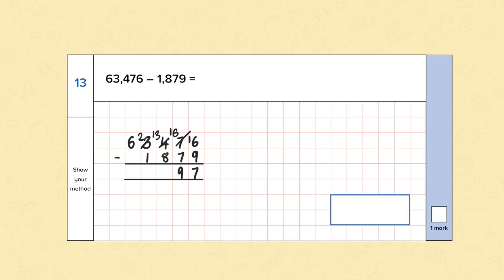This time, we've exchanged 1000 for 10 hundreds. 13 subtract 8 is 5. Now on to the thousands. 2 subtract 1 is 1. And then 6 subtract nothing is 6. So, 63,476 subtract 1,879 equals 61,597.